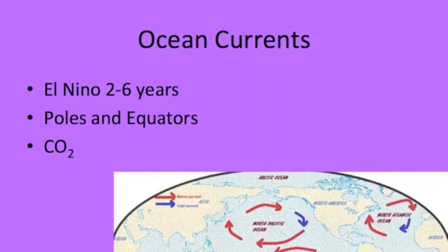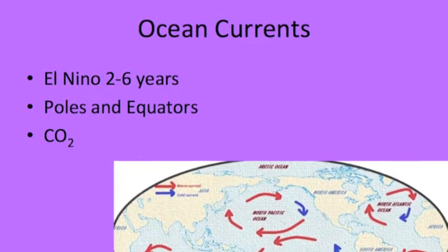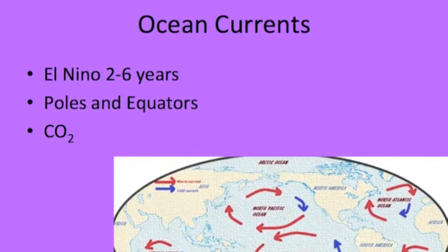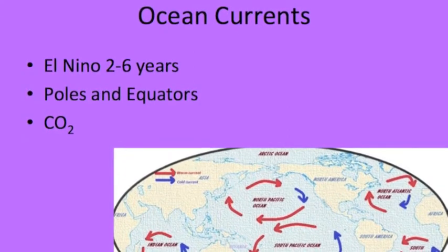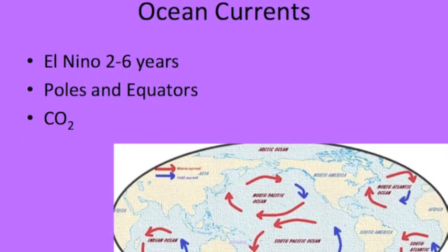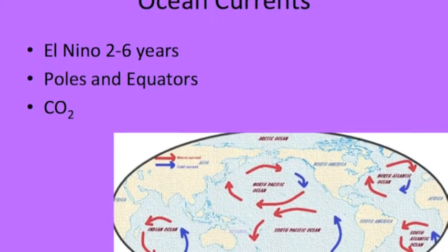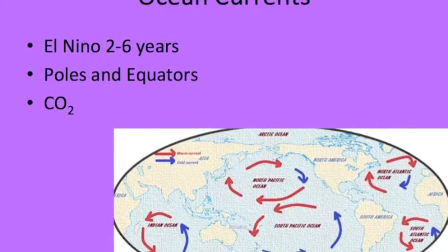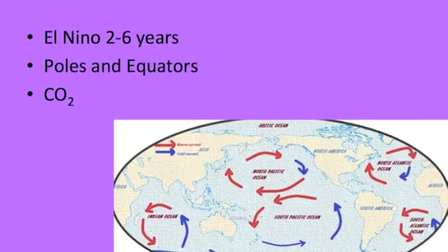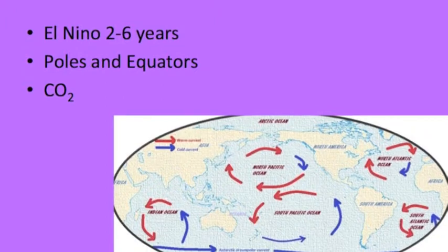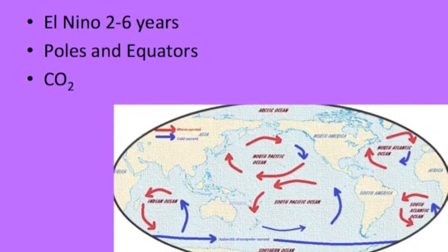The next slide is about ocean currents. El Niño is produced by many inter-reactions between the ocean and the atmosphere, and occurs every two to six years. Cold water moves from the poles towards the equator, while warm water moves from the equator towards the poles due to deep ocean currents. Due to ocean currents, the water temperatures would be less extreme at the poles and equator. Ocean currents also play an important role in atmospheric concentration by moving CO2 between the water and the atmosphere.